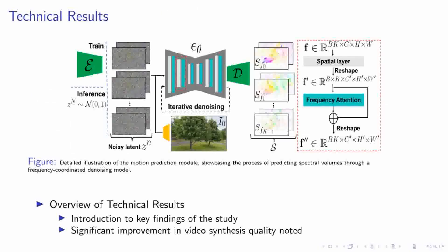Looking at the technical results of our study, we see a detailed illustration of our motion prediction module, which is at the heart of our approach. It utilizes a frequency-coordinated denoising model to predict spectral volumes. These spectral volumes encapsulate the essence of motion in a way that aligns with the natural frequencies observed in real-world dynamics. Our findings show a substantial improvement in the quality of video synthesis compared to existing methods — not just in the fidelity of the generated videos, but also in their temporal coherence, ensuring that the videos remain realistic throughout their duration. This marks a promising step forward in the field of video generation.